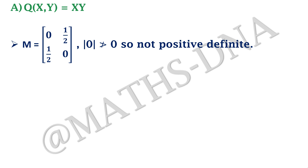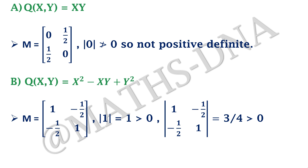Option A: Q(x,y) = xy gives M = [0, 1/2; 1/2, 0]. The first-order principal minor is 0, which is not greater than 0, so it is not positive definite. Option B: Q(x,y) = x² − xy + y² gives M = [1, −1/2; −1/2, 1]. The first principal minor is 1 > 0, and the second principal minor (det M) = 1 − 1/4 = 3/4 > 0. Both principal minors are positive, so this matrix is positive definite.